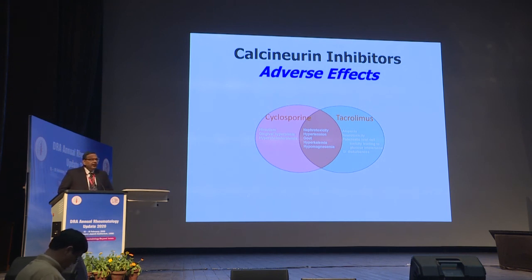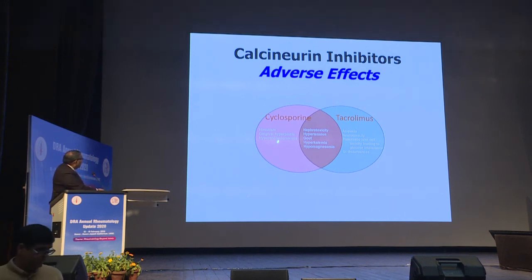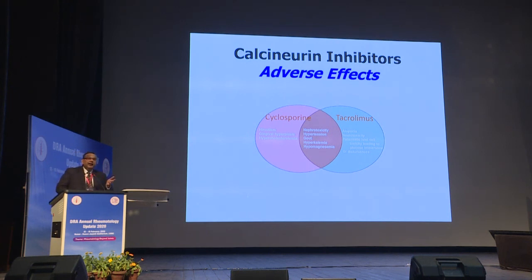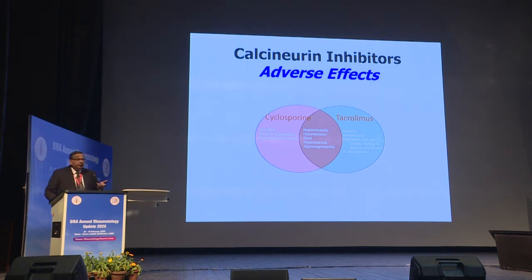Regarding adverse effects — some are class effects, some are molecule-specific. With cyclosporine: gingival hyperplasia, hirsutism, hypercholesterolemia. With tacrolimus: hair loss, neurotoxicity, tremors, peripheral neuropathy, and glucose intolerance. Both cause GI disturbances and nephrotoxicity. Calcineurin inhibitor nephrotoxicity is usually associated with higher trough levels and is a significant problem in transplant medicine. With the lower dosages employed in rheumatology, the incidence is much less.